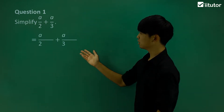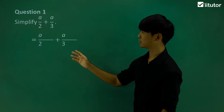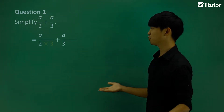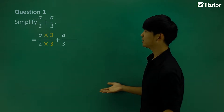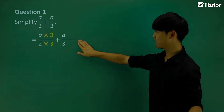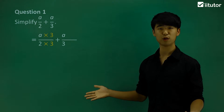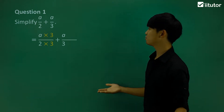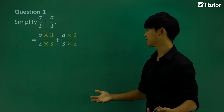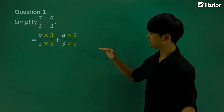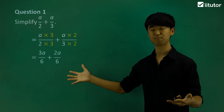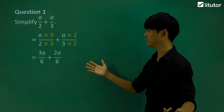Take a look. My first fraction, a over 2, I'm going to multiply the numerator and the denominator both by 3. And this fraction, a over 3, I'm going to multiply my denominator and my numerator both by 2. So what does that do? Well, as you can see, now they both have the same denominator of 6.